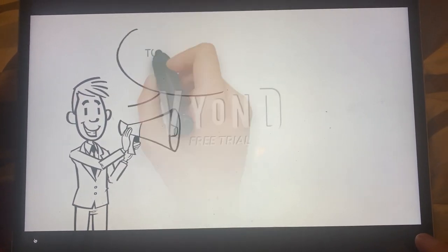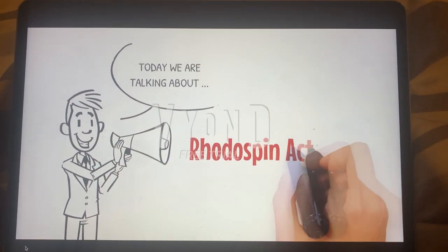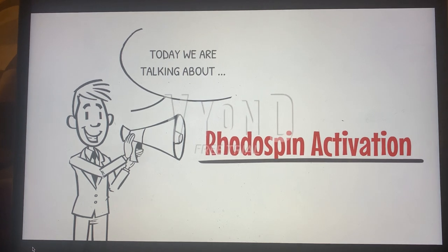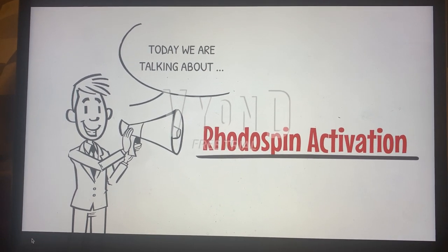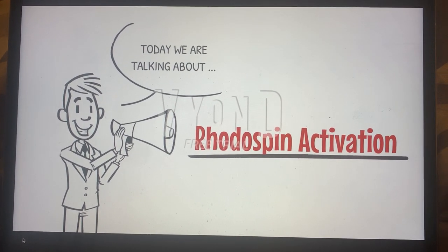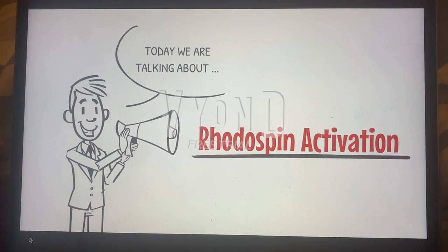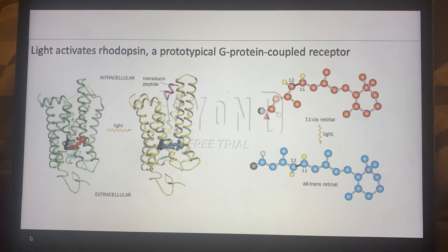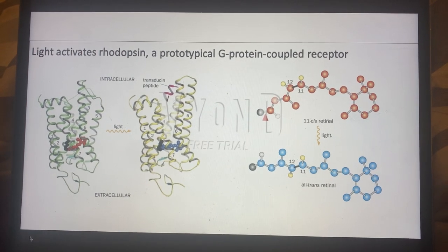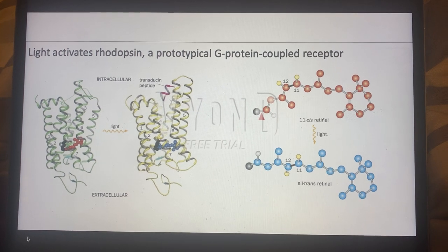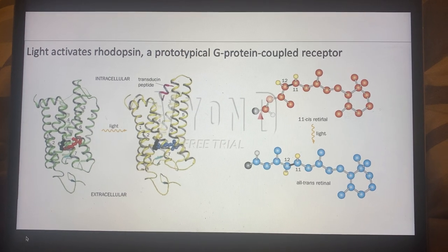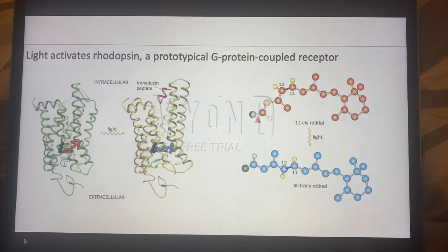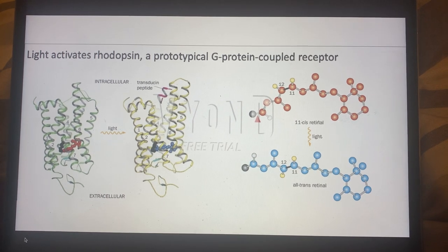Hello again, and in this video I'm going to be talking about rhodopsin activation and how this activation occurs via a light source. When we talk about rhodopsin, we have to think about the two things that comprise rhodopsin, and that being opsin and retinal. So what happens when light is detected by the rhodopsin protein?